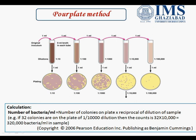The pour plate method is very important for industrial purposes. Suppose we want to find out how much bacteria is present in a particular sample — whether it is liquid like air or water, or solid like cheese or butter — we use this pour plate method. There is one thumb rule: we count only the plate which includes colonies between 30 to 300, because less than 30 and more than 300 both have chances of error.